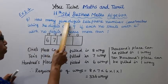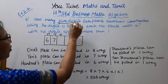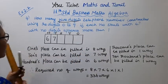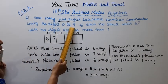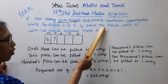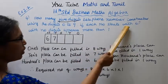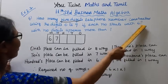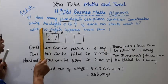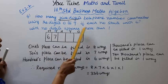How many 5-digit telephone numbers can be constructed using the digits 0 to 9, if each number starts with 67 and no digit appears more than once?